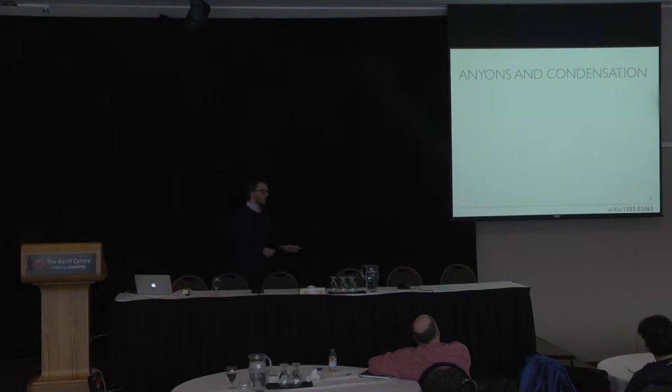To discuss the relation between the color code and the toric code, it is very insightful to look at anionic excitations in these two models and how they condense on their boundaries. So in particular,